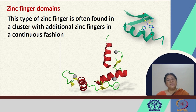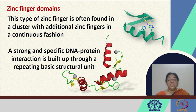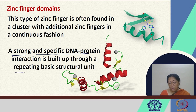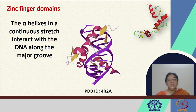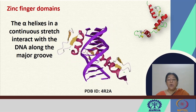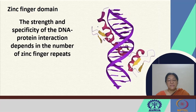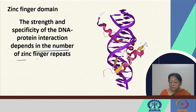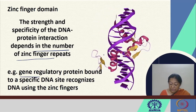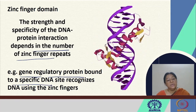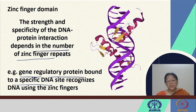In the zinc finger domain, there is an alpha helix and a beta sheet held together by the zinc ion. The importance of this domain lies in the activation of transcription of the ribosomal RNA gene requiring proper recognition. This type of zinc finger is sometimes found in a cluster with additional zinc fingers occurring in a continuous fashion to facilitate recognition. The repeating units allow a strong and specific DNA protein interaction. The alpha helices in the continuous stretch interact with the DNA along the major groove, and the strength and specificity depends on the number of zinc finger repeats in the recognition site.